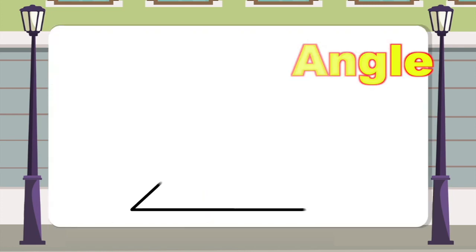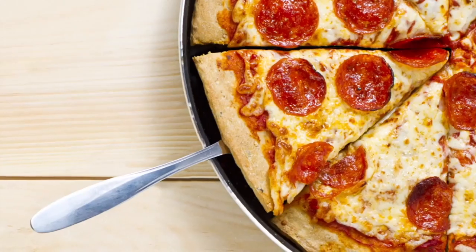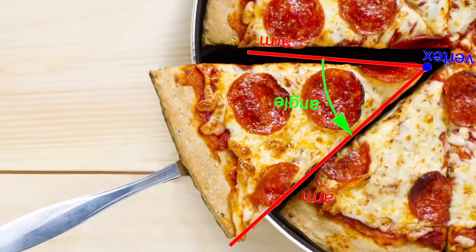Two lines meet at an angle. Pie and pizza slices are angles.